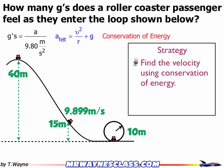I'm going to start with finding the velocity using the conservation of energy. Then I'm going to take that velocity and plug it into my acceleration felt formula. And from there I'll convert my answer of acceleration in meters per second squared into g's to answer the question of how many g's the passenger is going to feel.